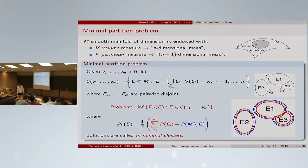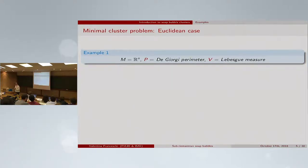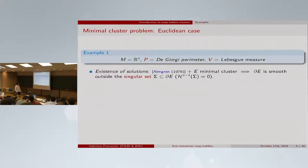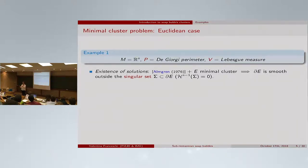The minimal partition problem has been a very good subject of study for researchers in calculus of variations and geometric measure theory. In the Euclidean case, the manifold is just R^n endowed with the standard De Giorgi perimeter and the Lebesgue measure. Existence of solutions is granted by an algorithm result, which proves moreover that minimal clusters have some regularity properties. In particular, the boundary of a minimal cluster is smooth outside a singular set of Hausdorff dimension n minus 1.